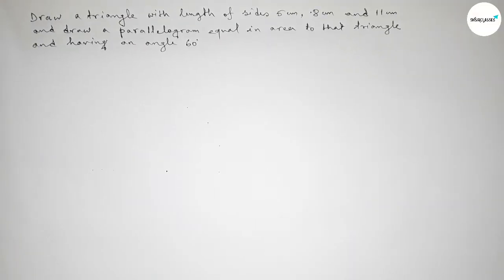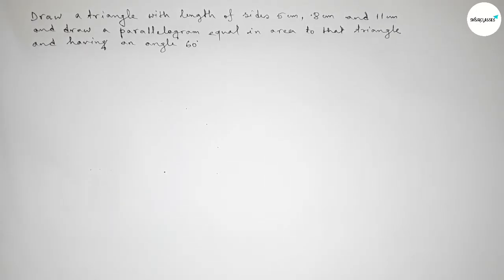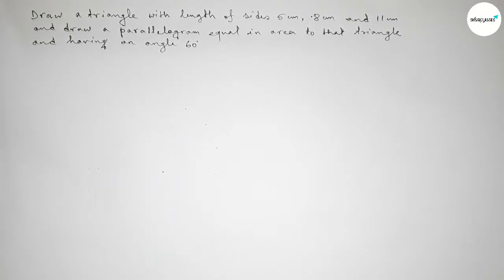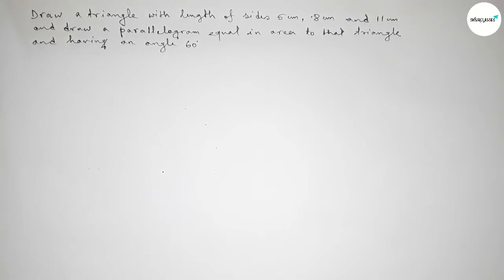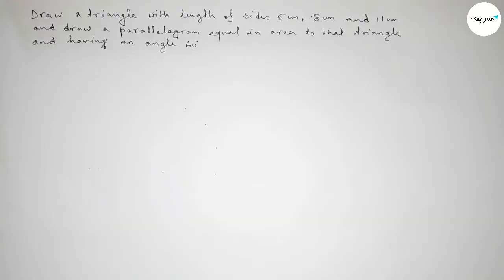Hi everyone, welcome to SH Share Classes. Today we're discussing an important geometrical construction. We have to draw a triangle with three sides of 5 centimeter, 8 centimeter, and 11 centimeter, then construct a parallelogram equal in area to the triangle and having an angle of 60 degrees. Let's construct this in an easy way.